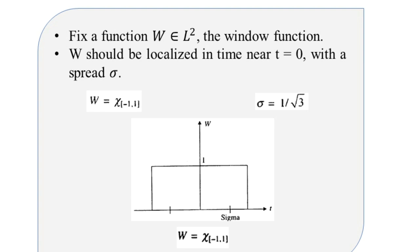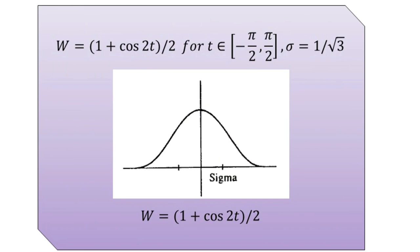The next window type has W described mathematically as (1 + cos(2t)) / 2, which holds for the time parameter t belonging to the range minus π/2 to plus π/2, and the standard deviation is again 1 over root 3. Since this window function has a cosine component, it does not have a constant amplitude of 1 as in the earlier case. It is graphically represented as an inverted bell-shaped curve.